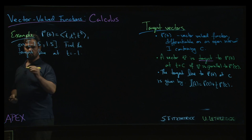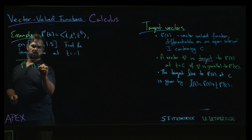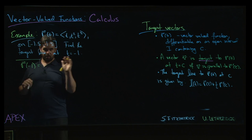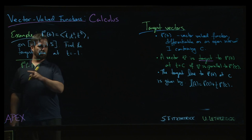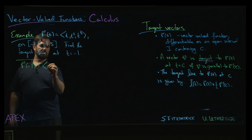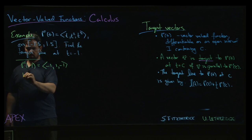And so what we need to do is we need to get two pieces of information. We need to get the point on the graph of r of t, which will be the point on our line. So we plug t equals minus 1 into the vector-valued function, we get minus 1, 1, minus 1. All right.